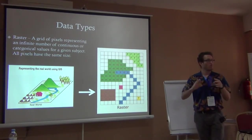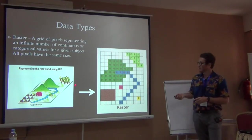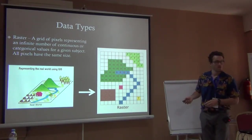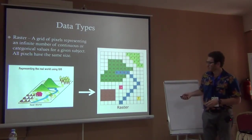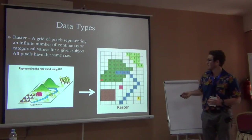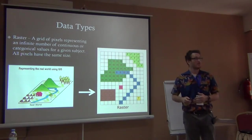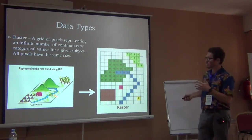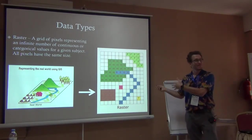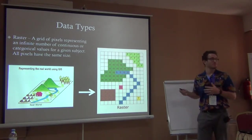Each value represents one possible category. In this example from the real world: H represents house, M represents mountain, R represents river, F represents forest. We've taken this real world and abstracted it into a two-dimensional representation of a grid of cells.